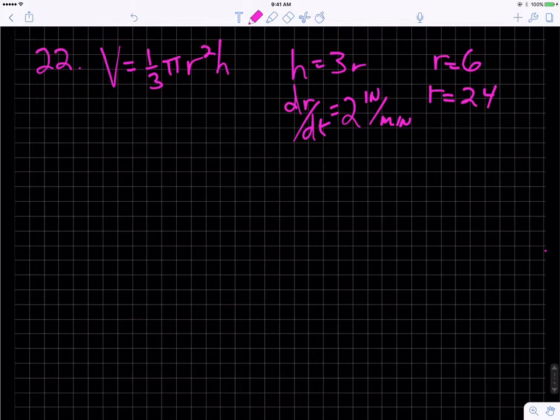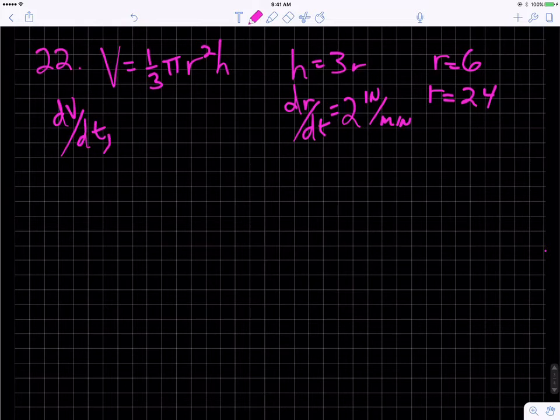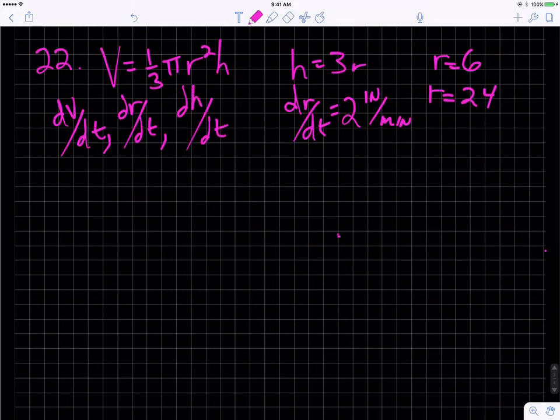Okay, so the problem is going to be if I take the derivative of this volume, the static volume equation as it is, I would get three rates: I would get a dV/dt, a dr/dt, and dh/dt. That is a problem because we only have dr/dt and we're looking for dV/dt. So we need to get rid—we can't have a dh/dt, we can't have the rate of change of the height.